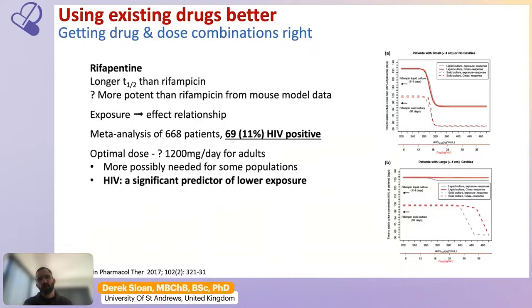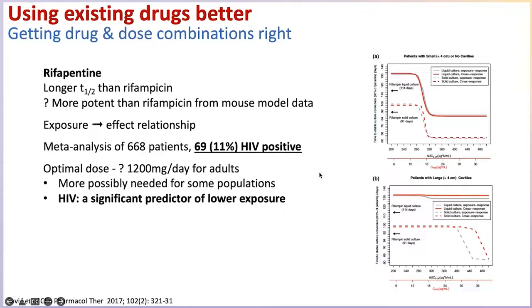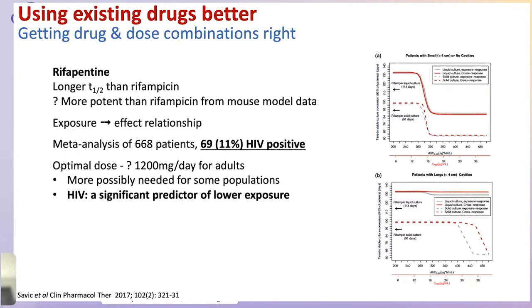Rifampicin is no longer the only rifamycin for TB treatment. There is significant interest, particularly in US-led studies, in rifapentine, which has a longer half-life than rifampicin and is possibly more potent. Rifapentine also has an exposure-response relationship where higher than standard doses — such as 1,200 mg per day, double the initial dose — may be beneficial, particularly for higher-risk populations. HIV is a significant predictor of lower rifapentine exposure. Some analyses showing that higher-dose rifapentine is effective were predominantly conducted in populations with lower numbers of people living with HIV.